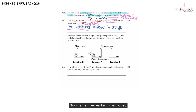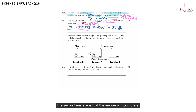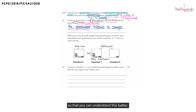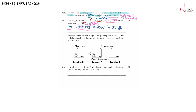I mentioned earlier that there are two mistakes. What is the second mistake? The second mistake is that the answer is incomplete. Now why do you think it is incomplete? Let me give you an analogy so that you can understand this better. Imagine yourself lying on the sofa comfortably and a fire suddenly breaks out at home.